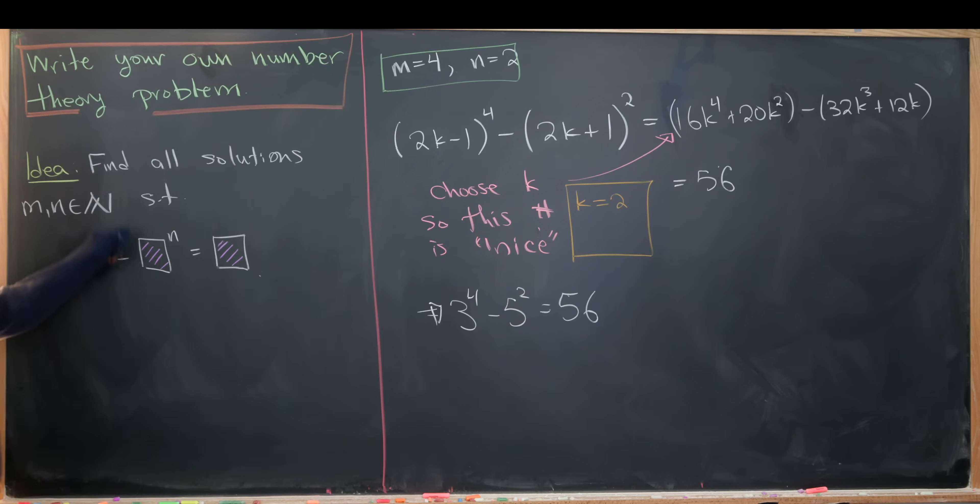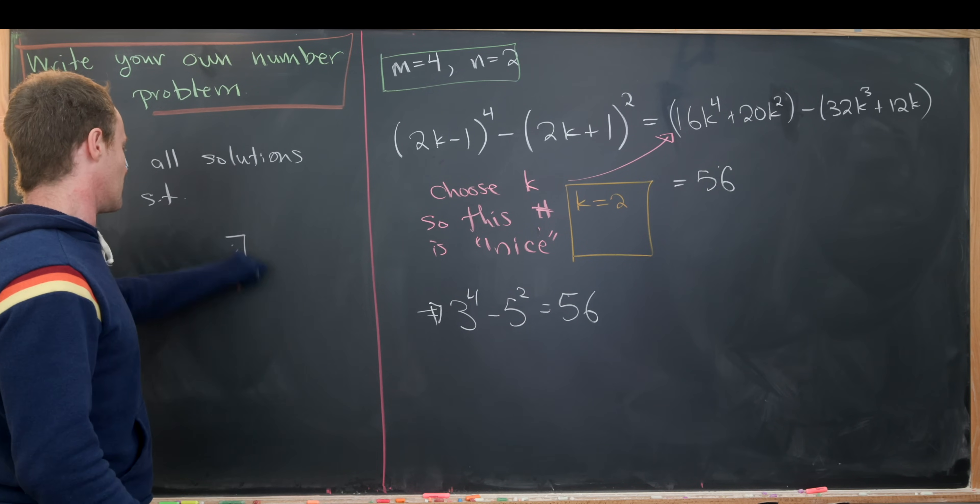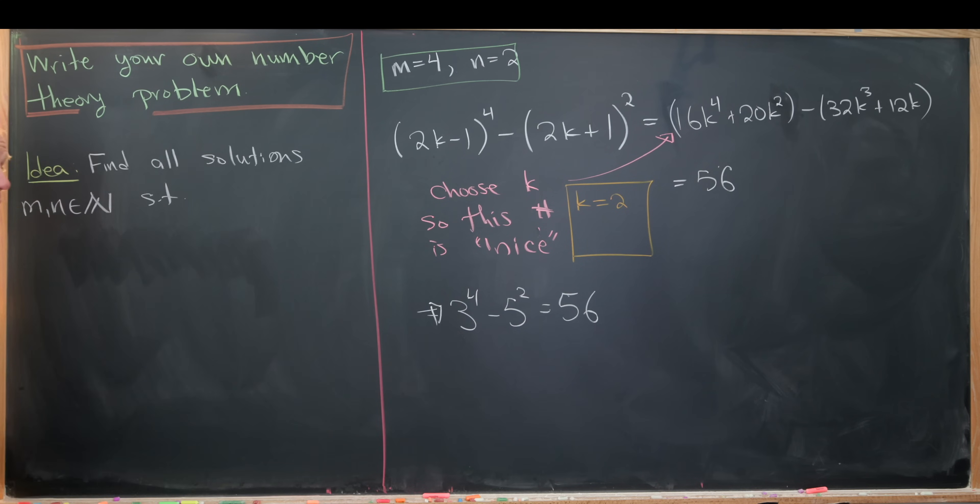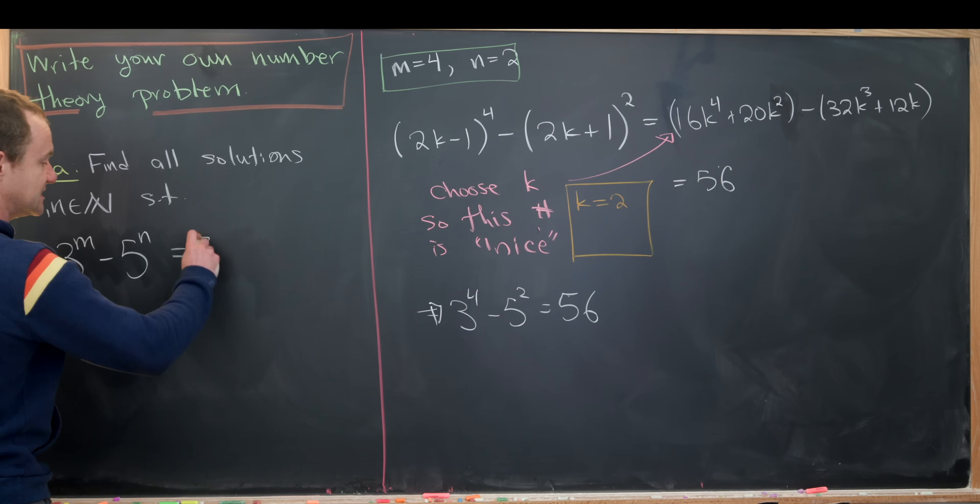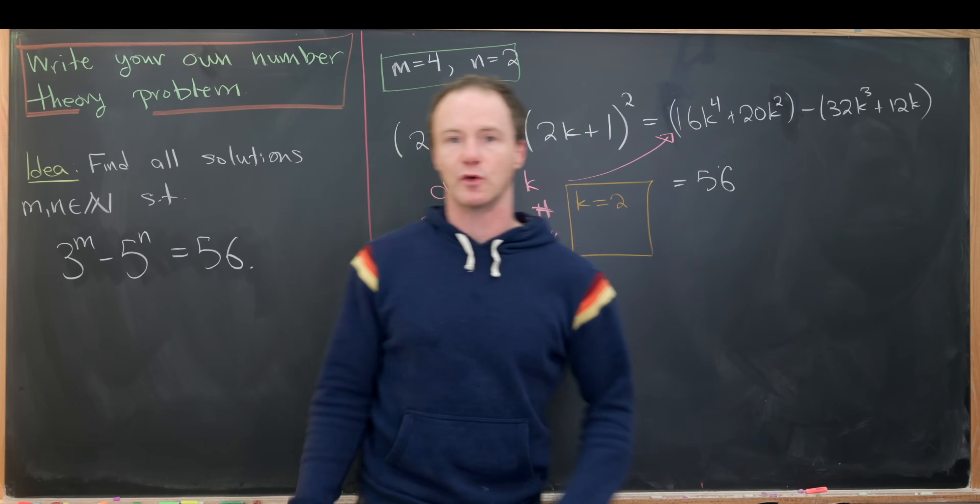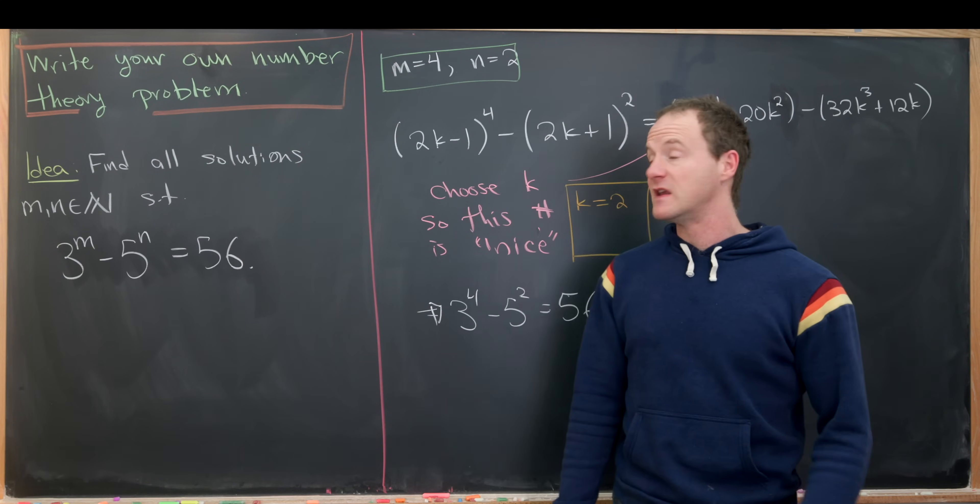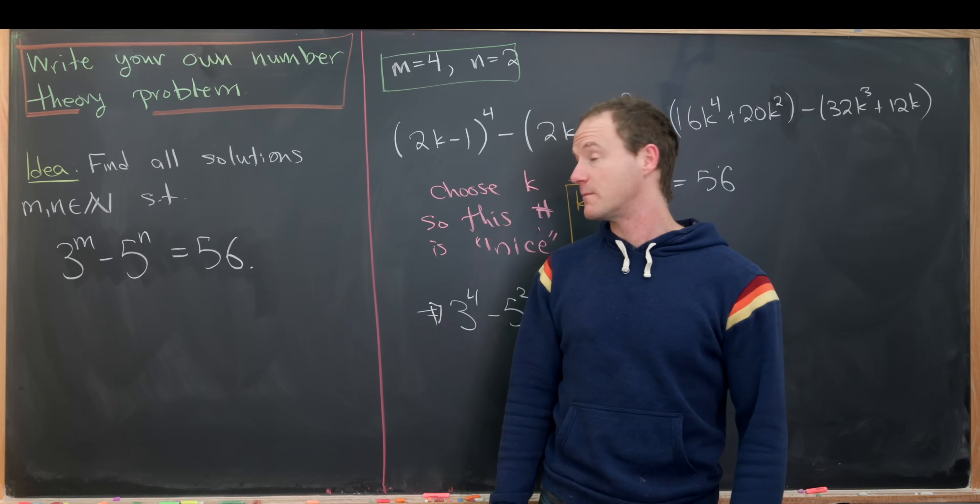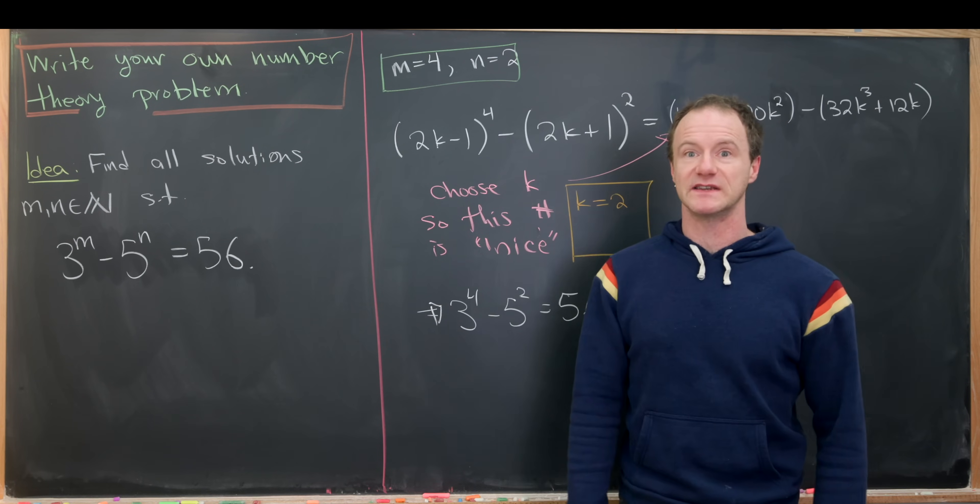Keeping that in mind, we can write down our final problem that we want to solve: find all solutions m and n, which are natural numbers, such that 3 to the m minus 5 to the n equals 56. This is looking good. We've written our problem, now we'd like to solve it.